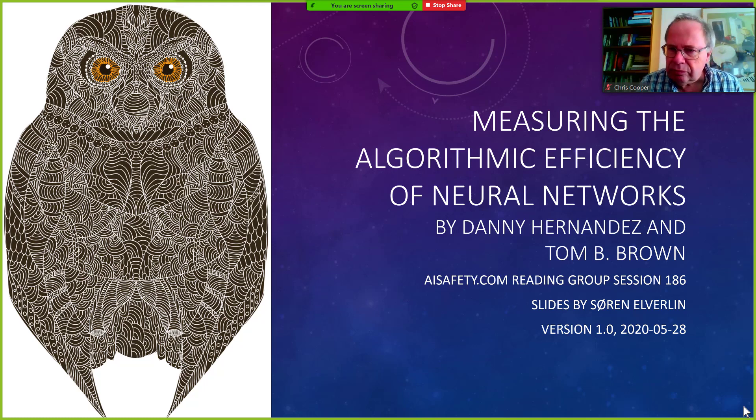Hello and welcome to session 186 in the AISafety.com reading group. Tonight we will be discussing the article Measuring the Algorithmic Efficiency of Neural Networks by Danny Hernandez and Tom Brown.